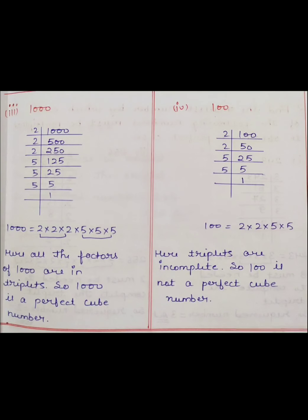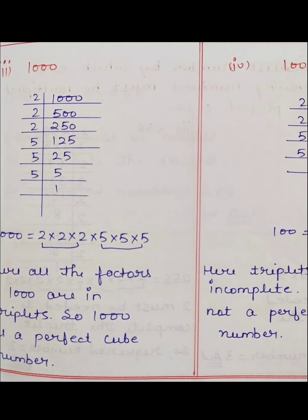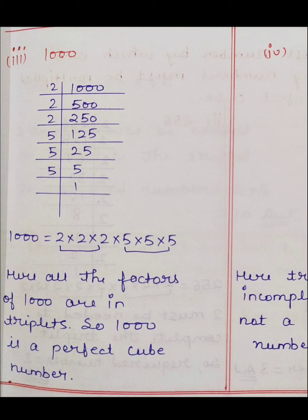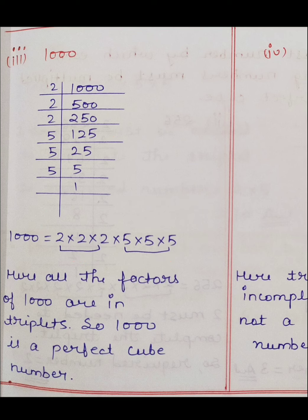Next number is 1000। 1000÷2=500, 500÷2=250, 250÷2=125। 125÷5=25, 25÷5=5, 5÷5=1। तो 1000 के prime factors: 2 आया 3 times और 5 भी आया 3 times। Triplets पूरे हो गए। Here all the factors of 1000 are in the triplets, so 1000 is a perfect cube number।